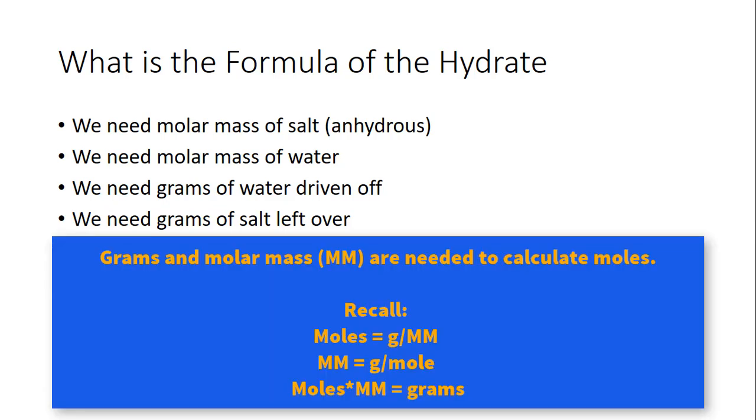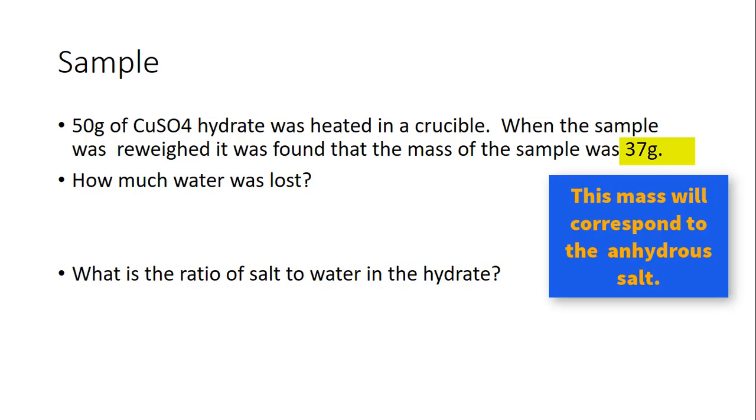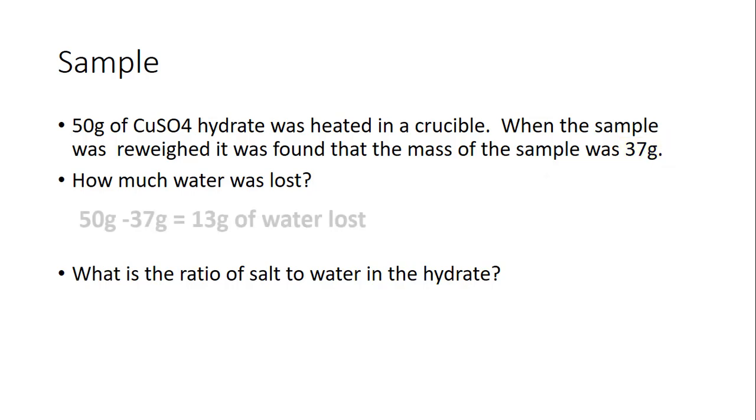Here's a sample: we have a 50 gram sample of copper sulfate and it's a hydrate. We heat it in the crucible. When the sample was reweighed it was found that the mass of the sample was 37 grams. How much water was lost? We take the difference: we started with 50 grams of the hydrate and we ended up with 37 grams of anhydrous salt. That means we lost 13 grams of water, and knowing that helps us to determine the other pieces of data that we need.